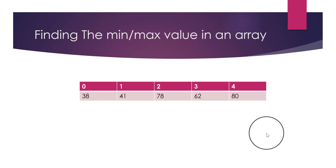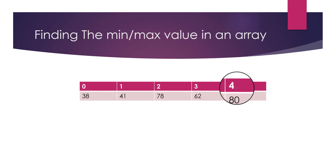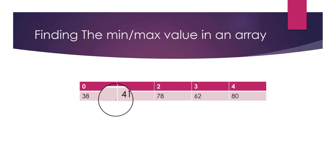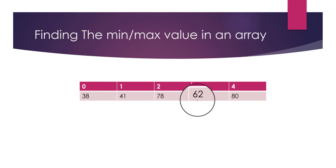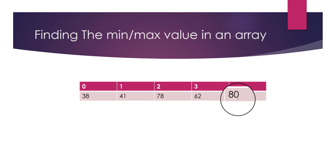In this video we will see how we can find the minimum or the maximum value in an array using a for loop. Let's say that we have an array with five elements: the first element is at location 0 and the last element is at location 4. At location 0 we have 38, location 1 has 41, location 2 has 78, location 3 has 62, and location 4 has 80. To find the maximum, we need to iterate through these elements.